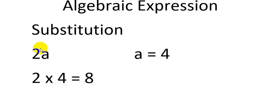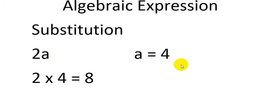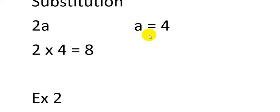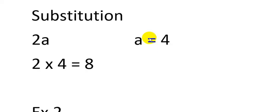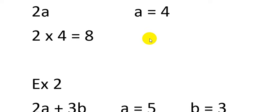The algebraic term is 2a and the value assigned for letter a, the unknown term, is 4. Substitution means I am going to replace the value corresponding to this unknown term. 2a refers to 2 multiplied by a, so 2 multiply by 4 which equals 8.